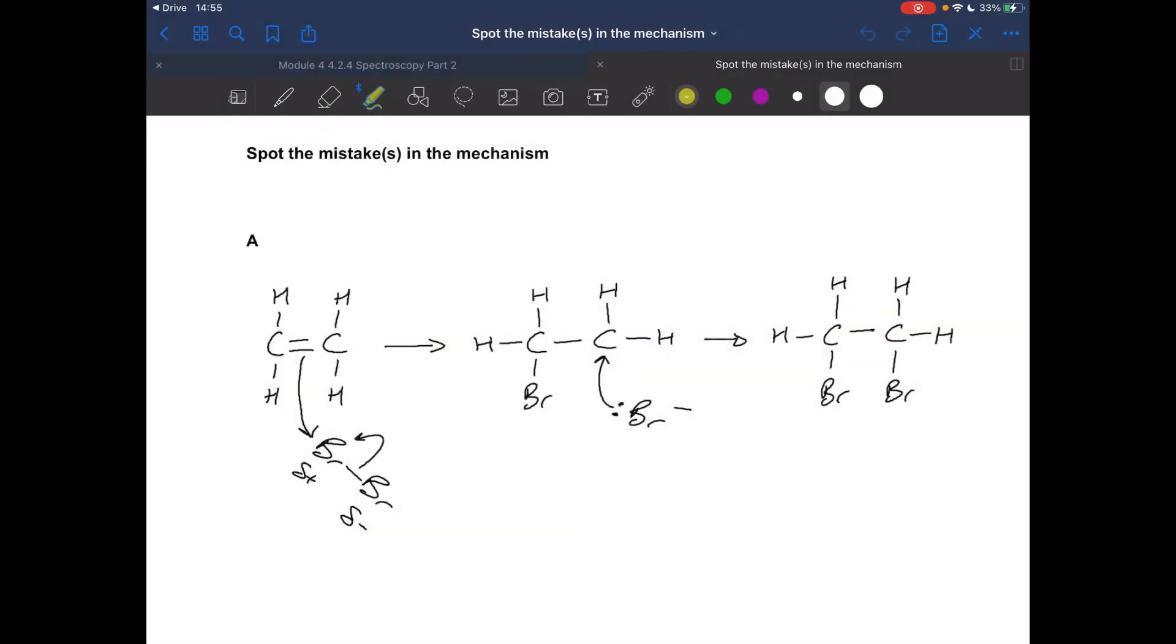Mechanism A, how many mistakes did you spot? There are actually two in this one. The first mistake is this curly arrow is going in the wrong direction. And the other one was the students forgot to put the charge on that carbon. It should have a positive charge on that carbon.